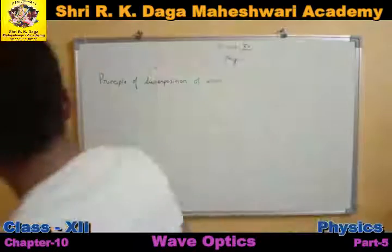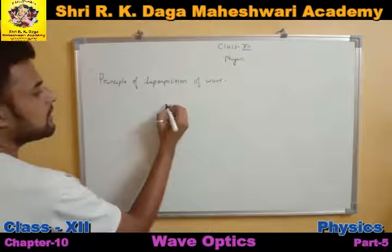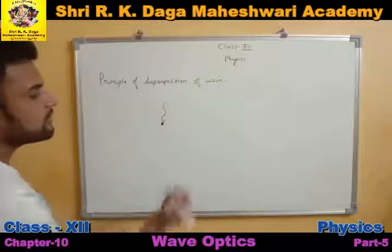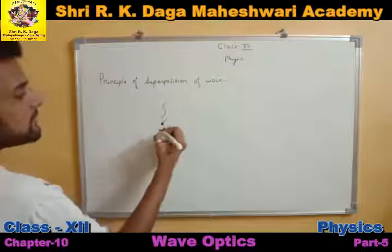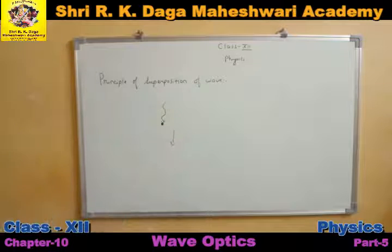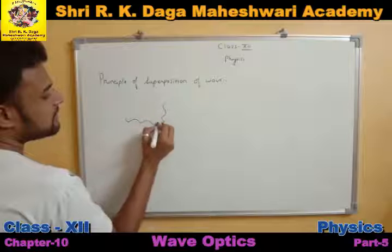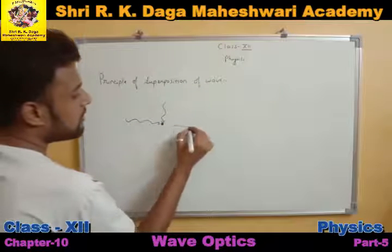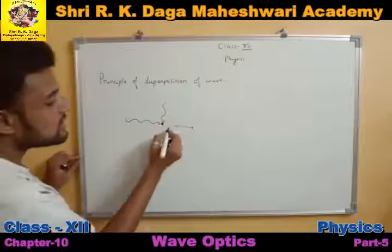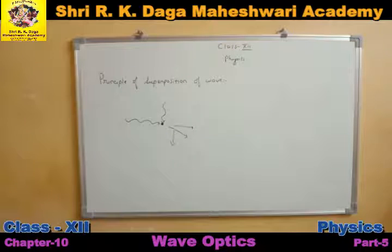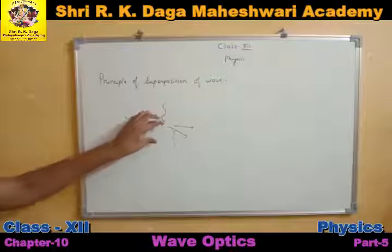Let us understand this with the help of an example. Suppose there is a particle placed here. If a wave comes from this side, it will displace the particle by giving it some energy. When the wave comes from this direction, the particle displaces in this direction. Similarly, if a wave comes from the other side, the particle displaces in that direction. But when both waves come simultaneously, the particle moves in some resultant direction.